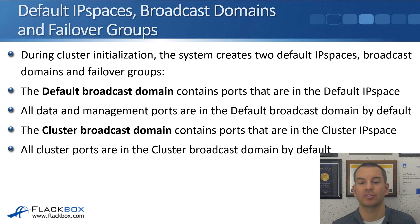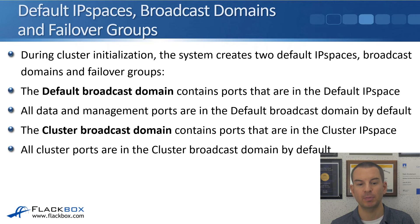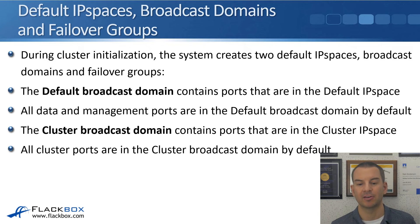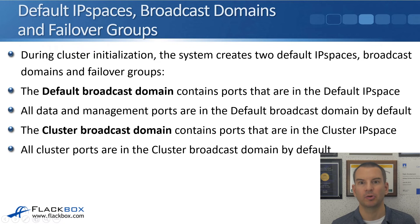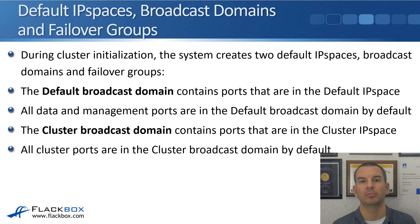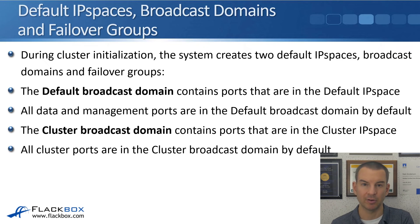During cluster initialization, the system creates two default IP spaces, broadcast domains, and failover groups. The default broadcast domain contains ports in the default IP space — all data and management ports are in the default broadcast domain by default. The cluster broadcast domain contains all cluster ports. The potential issue is that data and management ports are both in the default broadcast domain by default, but they have different connectivity. At minimum, we need separate broadcast domains for data and management, and quite likely multiple data broadcast domains.